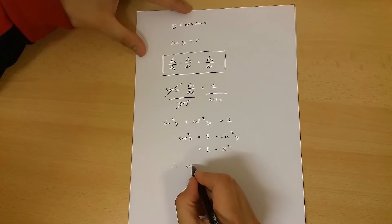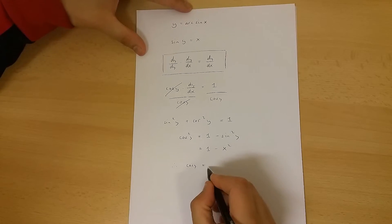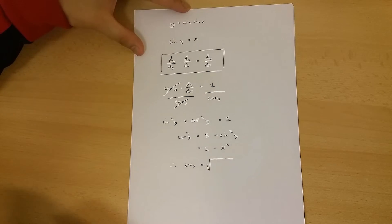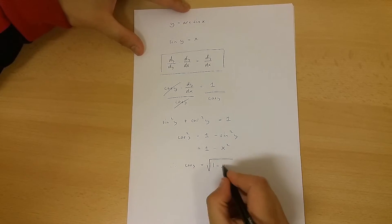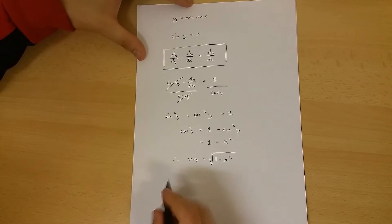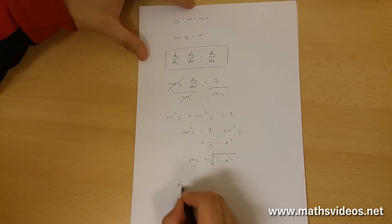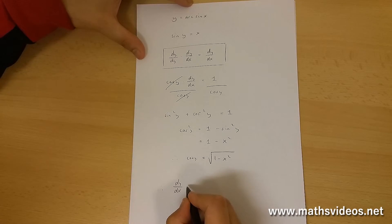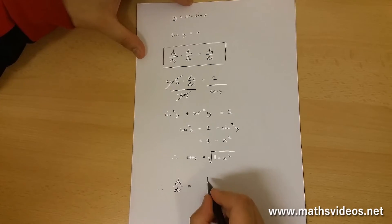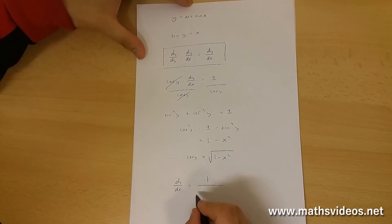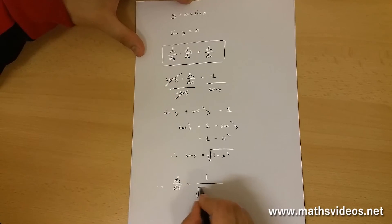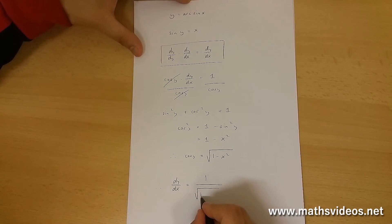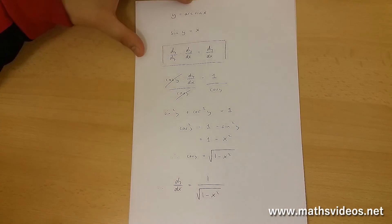Therefore, cos(y) equals the square root of 1 minus x². This means that dy/dx equals 1 over cos(y), which is 1 over the square root of 1 minus x².